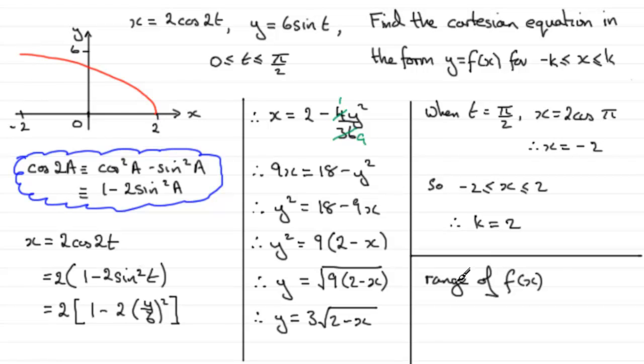So you can see that the range of f(x) is going to be such that, let's just put it down here, f(x) is greater than or equal to 0 and less than or equal to 6. All right?